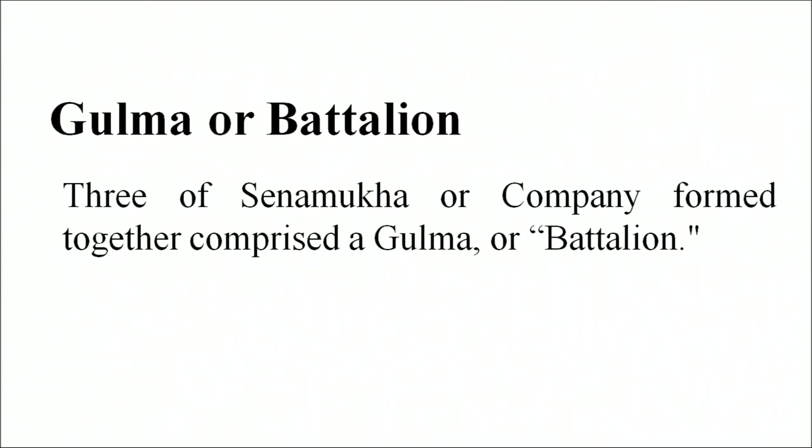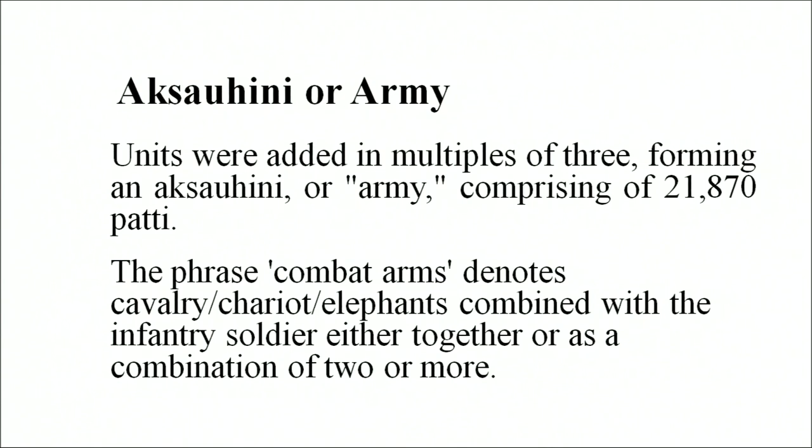Three Senamukhas or Companies formed together comprised a Gulma, also known as a Battalion. Units were added in multiples of three, forming an Aksoni or Army, comprising 21,807 Pattis. The phrase 'combat arms' was used and it denoted cavalry, oblique chariots, and oblique elephants combined with infantry soldiers, either together or as a combination of two or more.